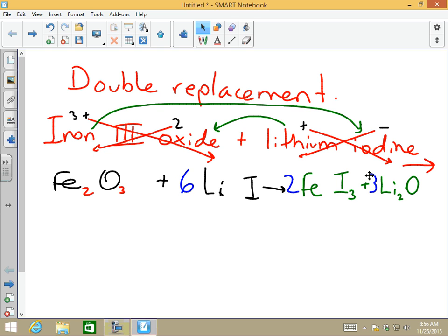Looking at this now, oxygens on my left I have three. On my right I have three. Fe's on my left side I have two, on my right I have two.